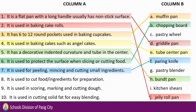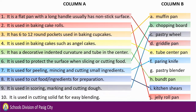Number 8: It is used to cut food or ingredients for preparation. Letter I — Kitchen Shears. Number 9: It is used in scoring, marking, and cutting dough. Letter C — Pastry Wheel. Number 10: It is used in cutting solid fat for easy blending. Letter G — Pastry Blender.